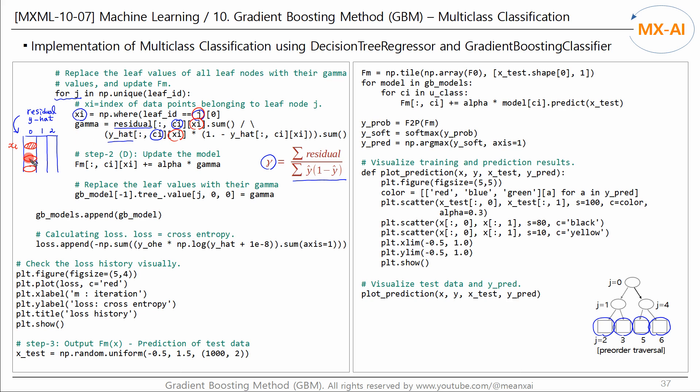And step D of step 2 uses this gamma to update the log odds fm value at that location. And replace the value of each leaf node with the gamma value. The intention is to return this gamma value when calling the predict function later. And store each tree model in a models list.